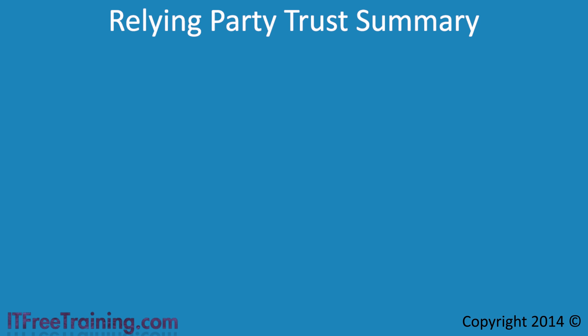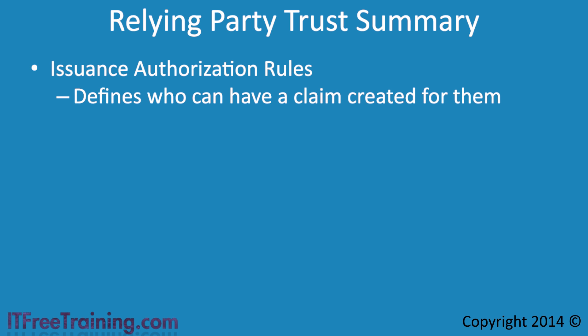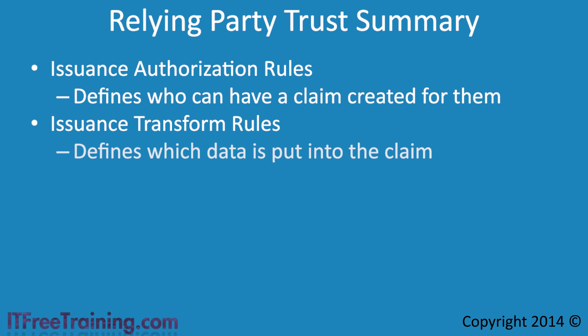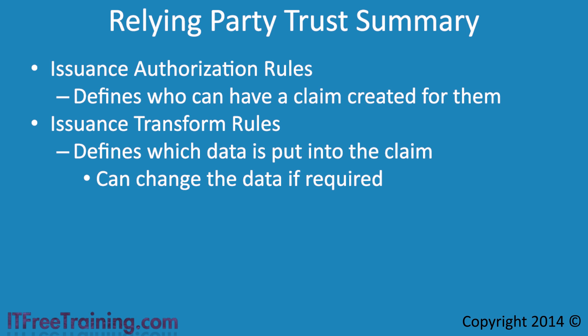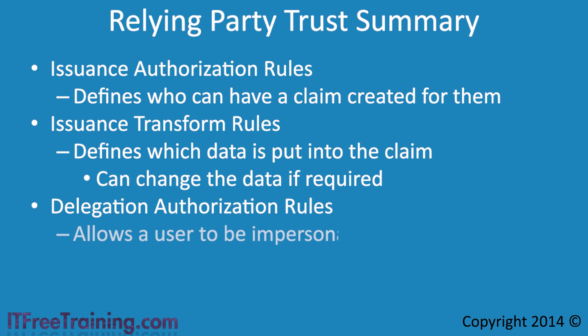The next point to remember is that a Relying Party Trust has three sets of rules associated with it. The issuance authorization rules define who can create claims — for example, all users with a particular email address or all users in a particular group. The issuance transform rules define what data is put into the claim; this can be data obtained from a number of different stores like Active Directory, SQL Server, and Active Directory Lightweight Directory Services. Remember that this data can also be changed if required — for example, if your usernames ended in .local, you may change the claim to have usernames that end in .com. Lastly, you have delegation authorization rules, which allow a user to be impersonated. This is generally done so data can be fetched for the user that they do not have direct access to, thus improving security.